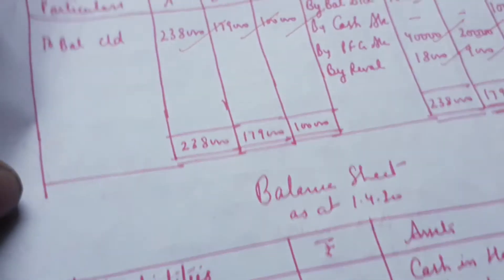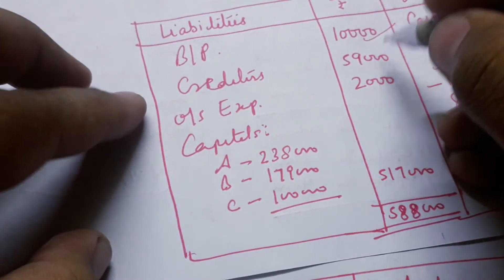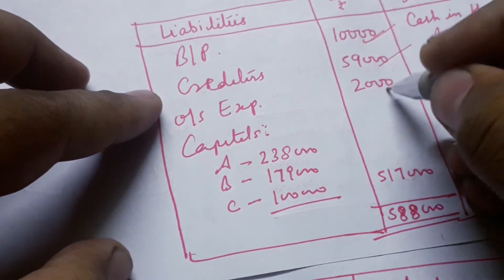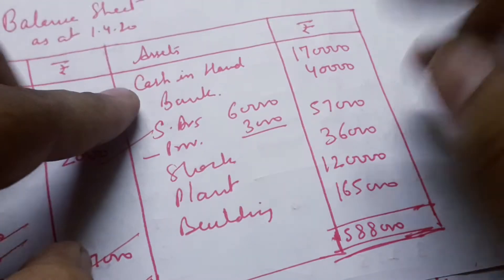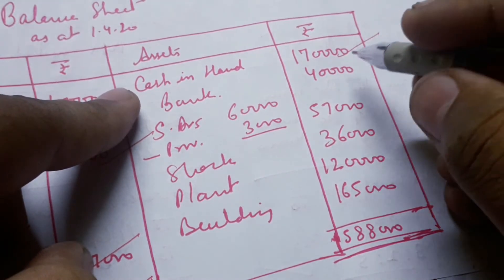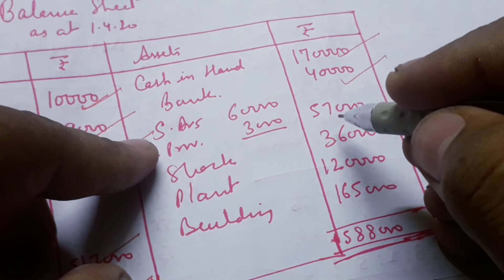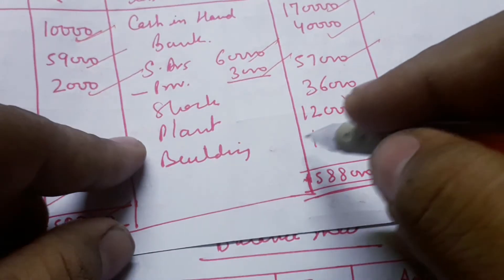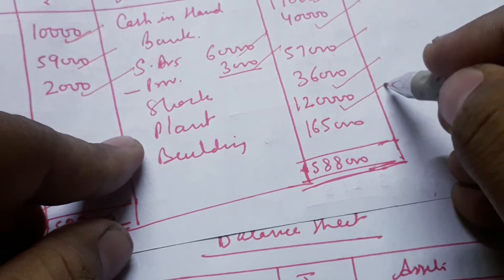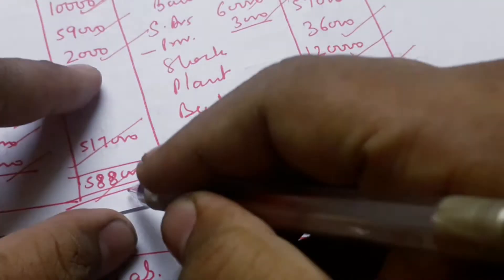The closing balances are $238, $179, and $1,000. In the balance sheet: building as it is, creditors $1,000, outstanding expenses as it is, capital is $5,888, cash $10,000, capital premium $1,60,000, bank $1,70,000, bank as it is $1,40, debtor minus $4,000, stock $4,000, plant $1,120, building $15,000, and total $5,888.